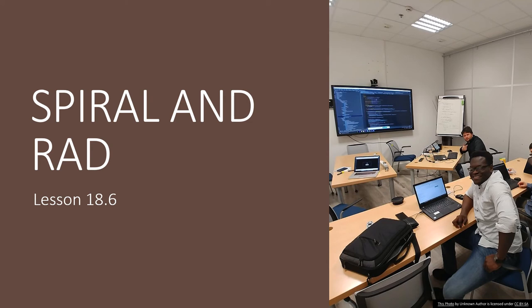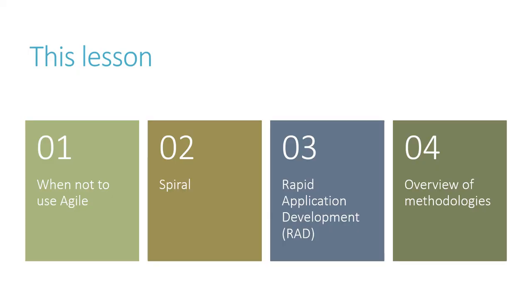Welcome back. In this lesson, the last in our series on software development, we will look at two final methodologies for software development and release. These are alternatives to the agile, fast turnaround, agile development methods that we looked at in the last lesson. The two methods we'll look at are Spiral and RAD, short for Rapid Application Development. And then I'll conclude this lesson with a brief overview of all five methods we've looked at so far.